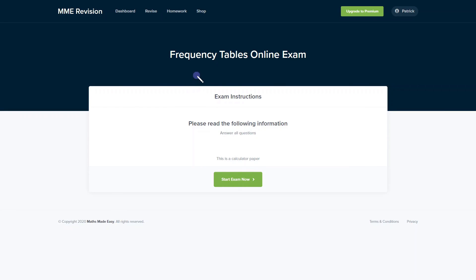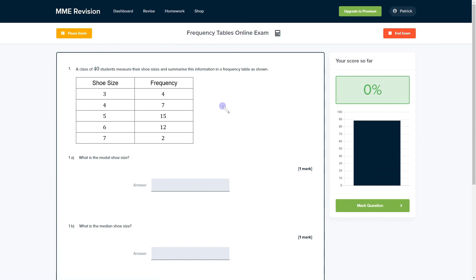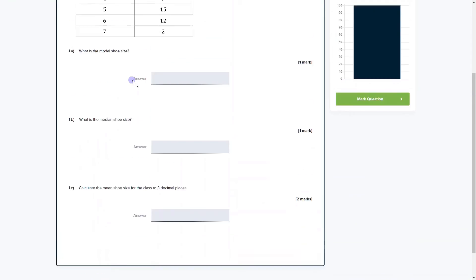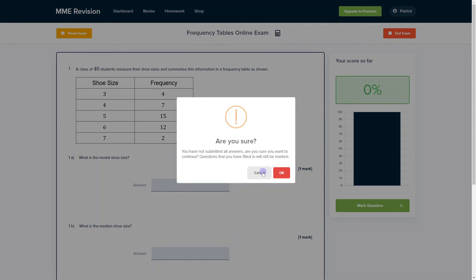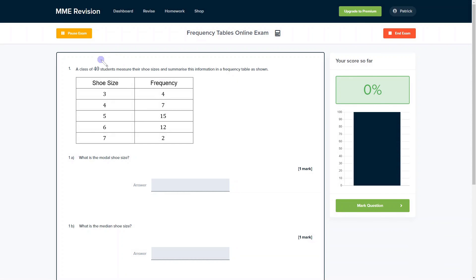If you'd like to practice your skills on frequency tables, you can do so with our online exam. It's available through our revision platform with loads of different questions for you to have a go at. You'll get instant feedback on each one so you can keep track of the areas you're weakest at and where you need to improve. If you're interested, you can click the link below.